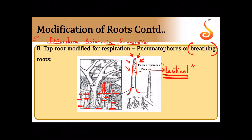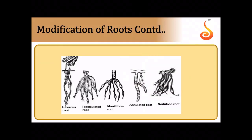Breathing roots are also a tap root system, modified for breathing, mostly found in plants growing in swampy and marshy areas where the ground is almost always submerged in water. Now moving to modification of adventitious roots — these are not normal tap root systems that develop from the radicle. Adventitious roots develop from any other part other than the radicle; literally in Latin, adventitious means coming from abroad or coming from elsewhere.